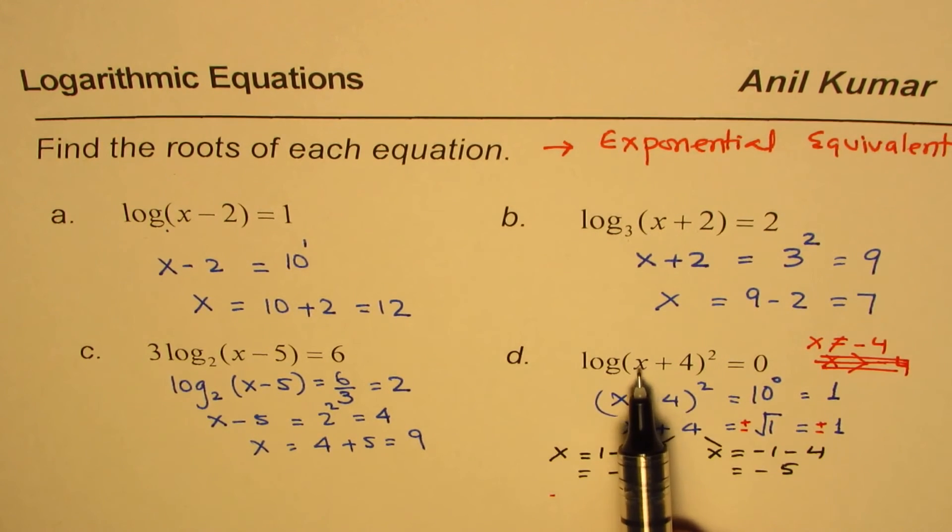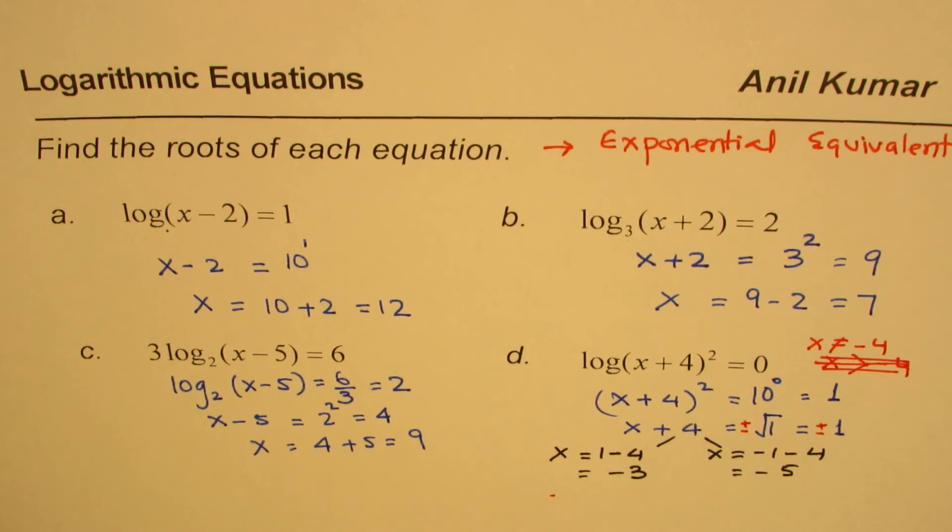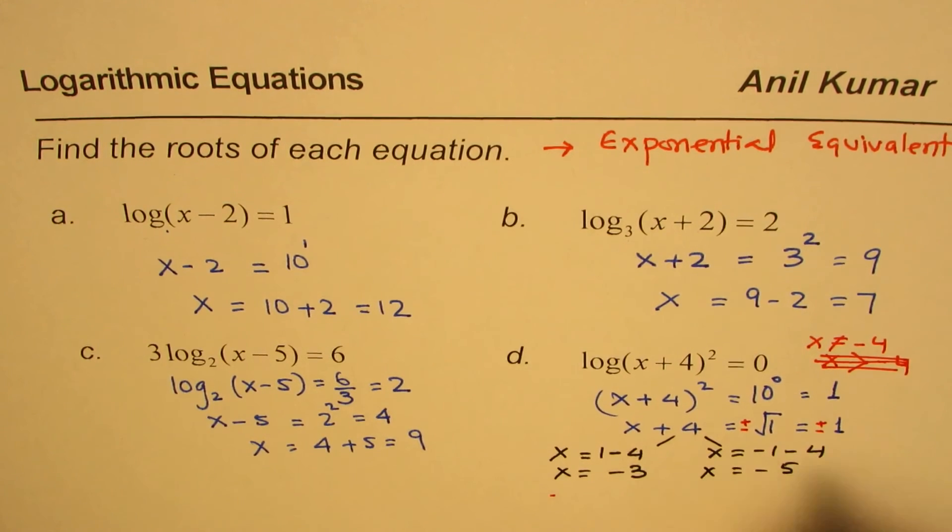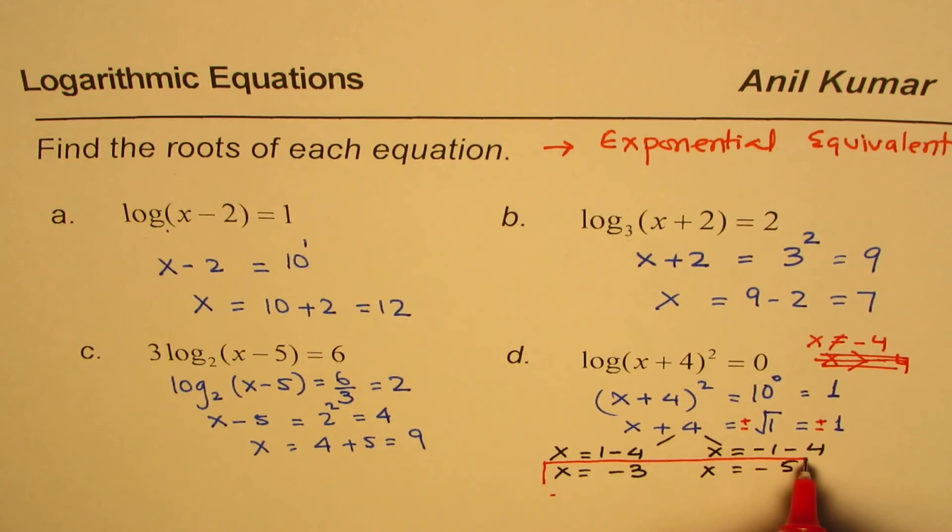Minus 5 here, minus 5 plus 4 is minus 1, but square of minus 1 is plus 1. So log of 1, you know, is 0. So that is also true. So in this case, we get two solutions. The solutions here are x equals minus 3 or x equals minus 5. Both are the solutions. That is very important to understand.